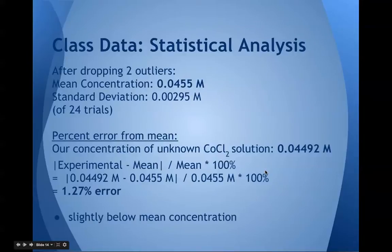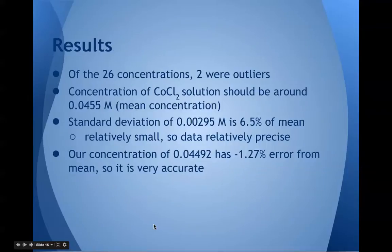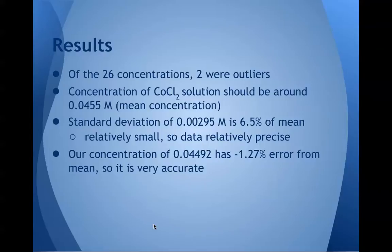After analyzing the class data and dropping two outliers, we found that the mean concentration was 0.0455 molar and the standard deviation was 0.00295 molar. This is out of 24 trials. The percent error from the mean was 1.27%, slightly below the mean concentration. Out of 26 concentrations, two were outliers. The standard deviation of 0.00295 molar is 6.5% of the mean, which is relatively small, so we can conclude our data was relatively precise. Our concentration of 0.04492 molar has a 1.27% error — disregard the negative sign, that's an error from the mean — meaning our data was relatively accurate.